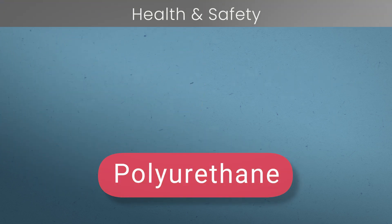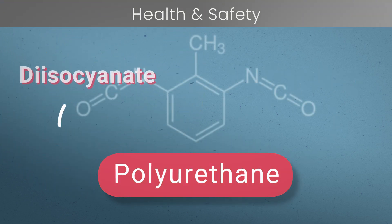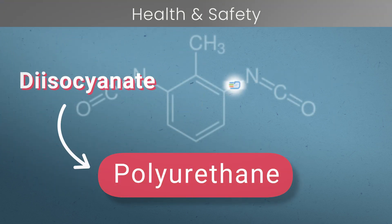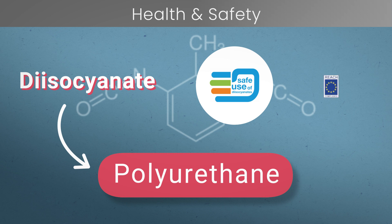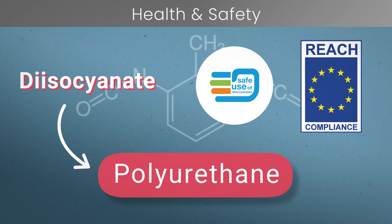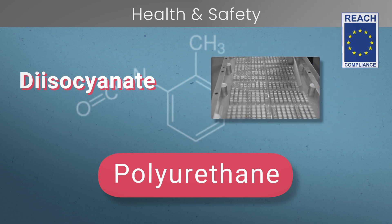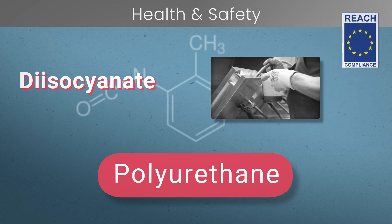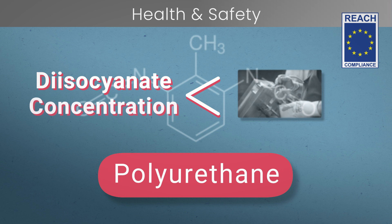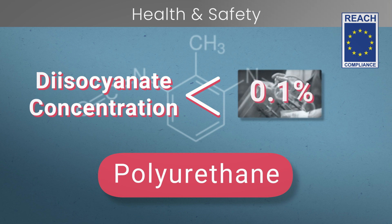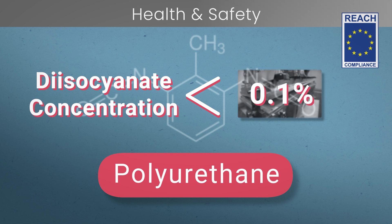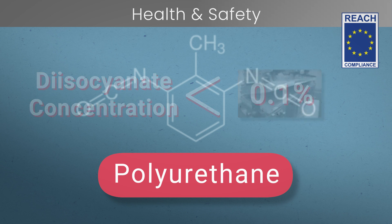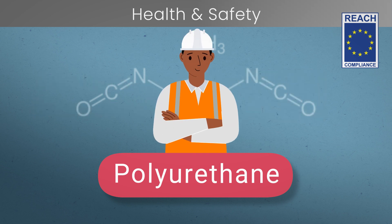Because polyurethane-based products contain diisocyanate, their use has recently come under restrictions. They cannot be used for industrial applications unless the concentration of diisocyanate is less than 0.1%, or the users have received appropriate training on safe usage.